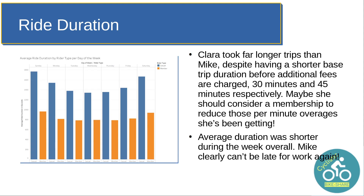One thing that might be surprising is that Clara takes far longer trips than Mike, despite having a shorter base trip duration before per-minute charges kick in — those are 15 minutes and 45 minutes respectively. Take a look at Sunday for the casual riders in blue: they're approaching 1,800 seconds on average, which is 30 minutes. So Clara has likely experienced some sticker shock seeing those per-minute overage charges. We could use that to encourage her to consider getting a membership to get rid of those overage charges. The average duration was also shorter overall during the week, especially for members — Mike is probably late for work sometimes and can't afford to dawdle.